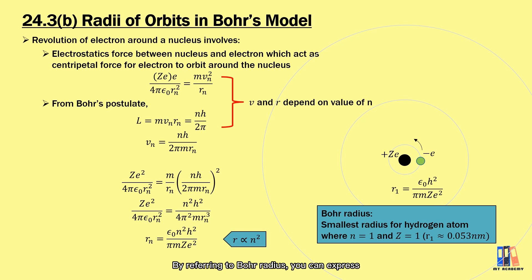By referring to Bohr's radius, we can express other orbits in a simpler way. For example, the second orbit of hydrogen atom is 4r₁, the third orbit is 9r₁ and so on.